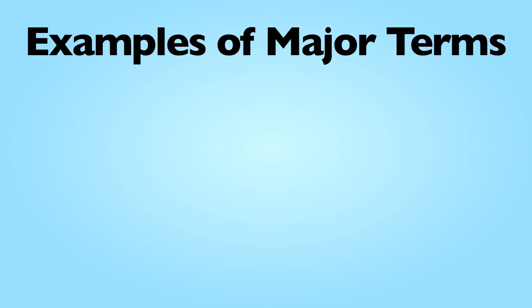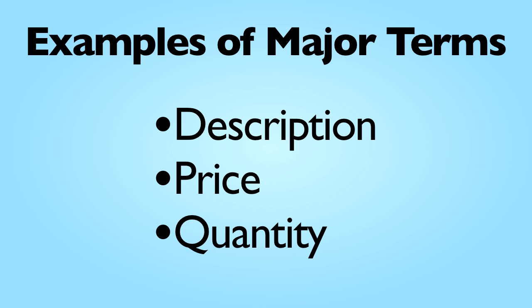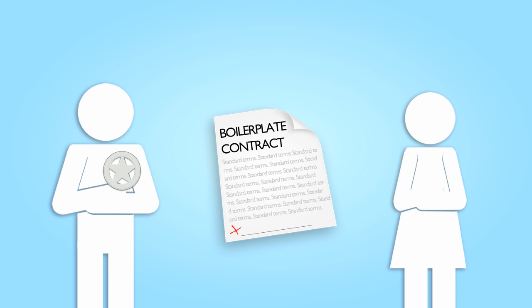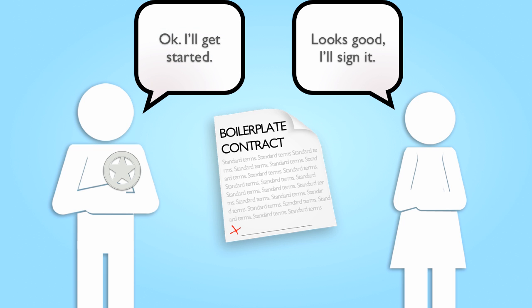In general, commercial parties are interested in the major terms of a contract — description, price, and quantity. Given how common the use of pre-printed forms has become in today's commercial world, parties tend not to haggle over the standard terms and conditions in boilerplate. Therefore, when such forms are used for contracting, there are likely to be conflicts between the terms of the parties' respective documents. Nonetheless, in the vast majority of cases, such conflicts are irrelevant because parties undertake and complete their contractual obligations without any dispute, entirely oblivious to the fact that the documents they exchanged contain conflicting provisions.